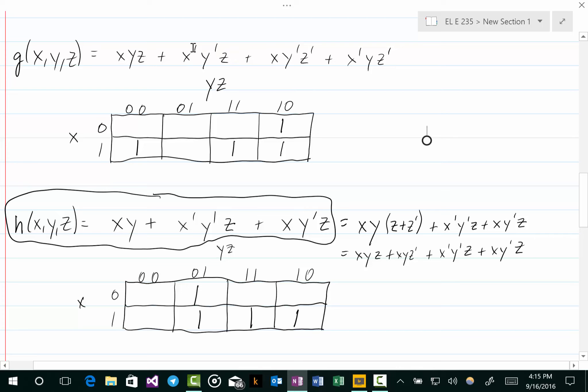In doing that second term, for each one of these terms what we want to do is figure out for what values of the variables the term, each one of these is a minterm. So for each one of these minterms we want to find out what combination of the variables will make the minterm equal to 1, and that will tell us where to put the 1 in the Karnaugh map.